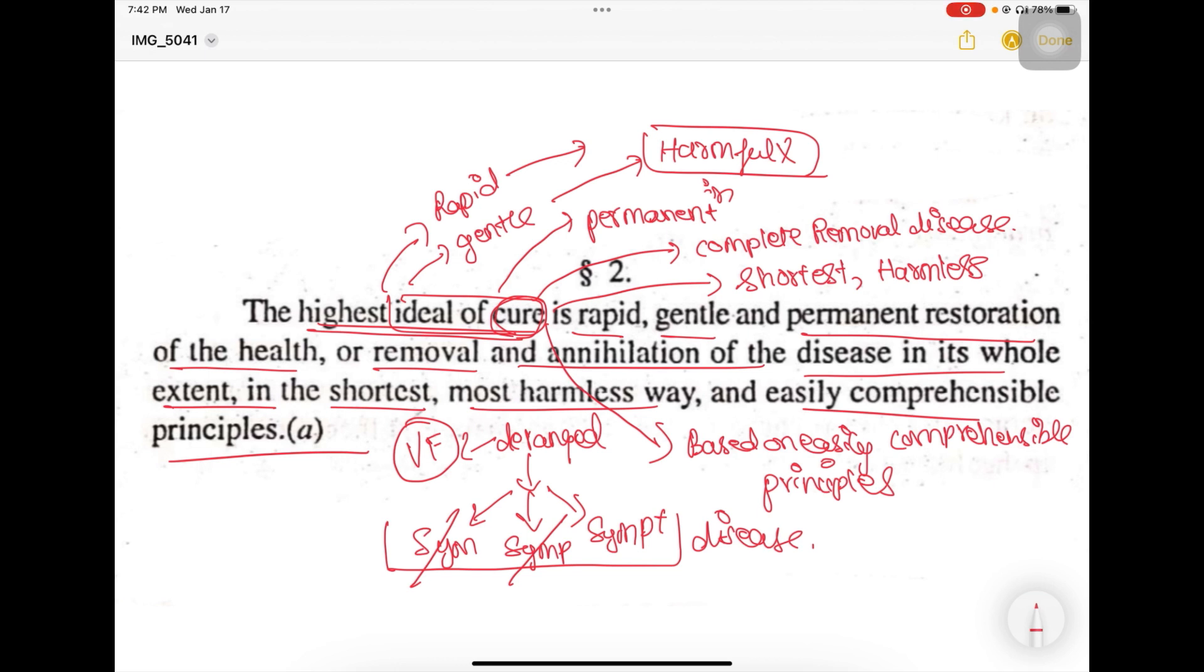So what Hahnemann is trying to tell us in this aphorism is that removal of one or two symptoms cannot be called as a cure. We need to annihilate or remove this entire disease by which he means that all the symptoms of a disease have to be removed. And in order to remove all the symptoms of a disease, we will have to treat the deranged vital force. So he says restoration of health means that the deranged vital force has to be brought back to its healthy, harmonious state. The disease in its whole extent has to be removed. Removal of one or two symptoms cannot be termed as cure.